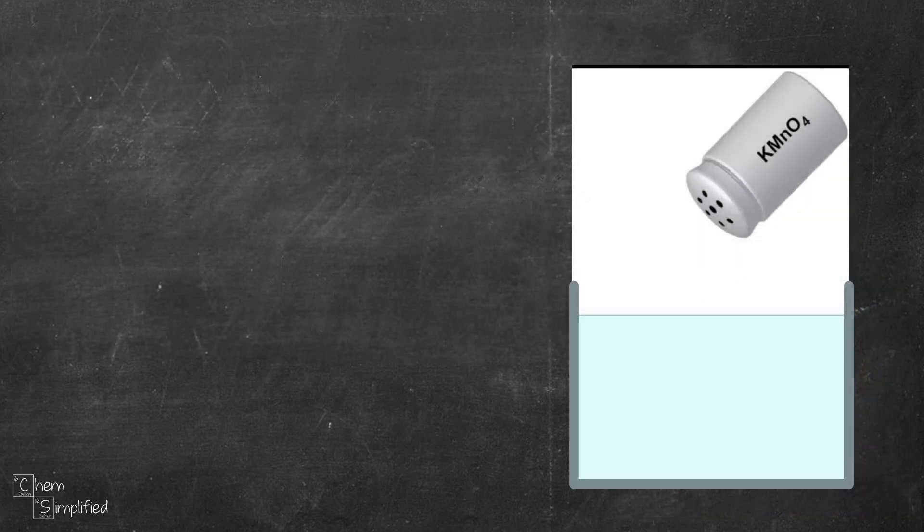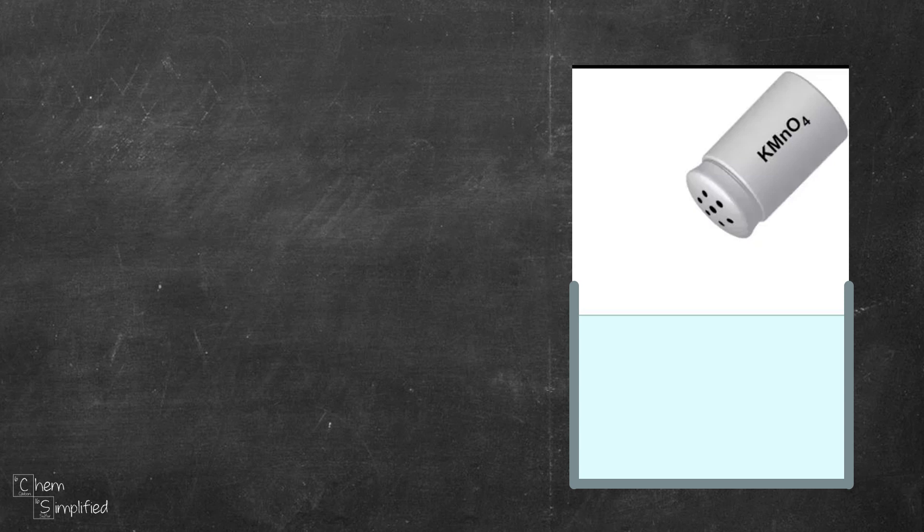Consider this: we have a beaker filled with water, and in the shaker we have potassium permanganate, KMNO4. Why? I don't know, let's just say we happen to have it in the shaker.